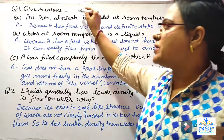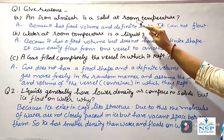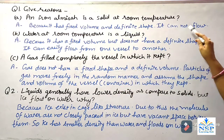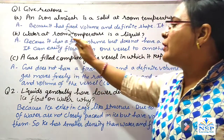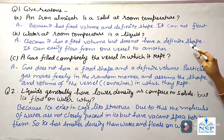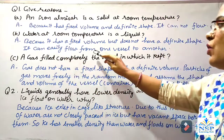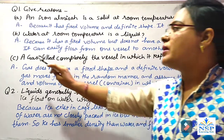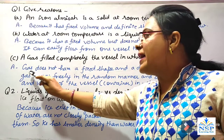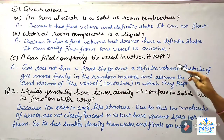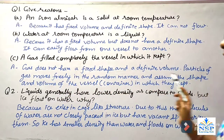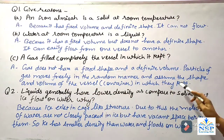It is time for question-answer. Give reasons: An iron almirah is a solid at room temperature because it has fixed volume and definite shape and it cannot flow. Water at room temperature is a liquid because water has fixed volume but does not have definite shape — it can easily flow from one vessel to another. A gas fills completely the vessel in which it is kept because gas does not have a fixed shape and definite volume; particles of gas move freely in a random manner and assume the shape and volume of the container.